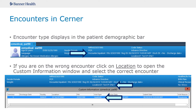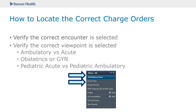As you can see in this example, it says inpatient. For this patient, you would select an inpatient code. If you open the wrong encounter, simply click on the word location and it opens all encounters for that patient within Banner. From there, you will select the correct encounter date.